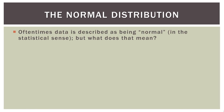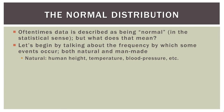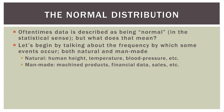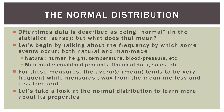So what about the normal distribution? Data is often described as being normal in the statistical sense. Let's talk about the frequency by which some events occur, both natural and manmade. Natural examples include the height of an adult human, the temperature outside, and a person's blood pressure. Manmade examples include machined products in quality control, financial data, and sales data in business. For these measures, the mean tends to be very frequent, while measures away from the mean are less and less frequent — so the data clumps around the mean.